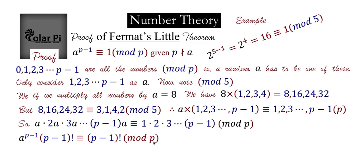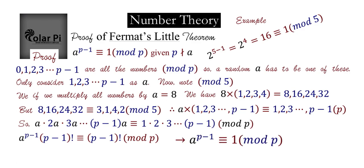Now notice that p does not divide p minus one factorial, because none of the numbers in p minus one factorial are p — they're all less than p — so p cannot divide any of them. Because p does not divide p minus one factorial, we can cancel p minus one factorial from both sides. We could not cancel if p divided p minus one factorial, but since it doesn't, we cancel and get what we desired: Fermat's Little Theorem.